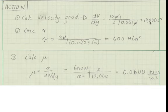The velocity gradient is 10,000 inverse seconds. The shear stress at the wall is 600 newtons per square meter or 600 pascals.